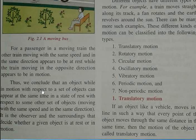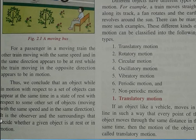Thus, we conclude that an object, while in motion with respect to a set of objects, can appear at the same time in a state of rest with respect to some other set of objects. It is the observer and the surroundings that decide whether a given object is at rest or in motion.